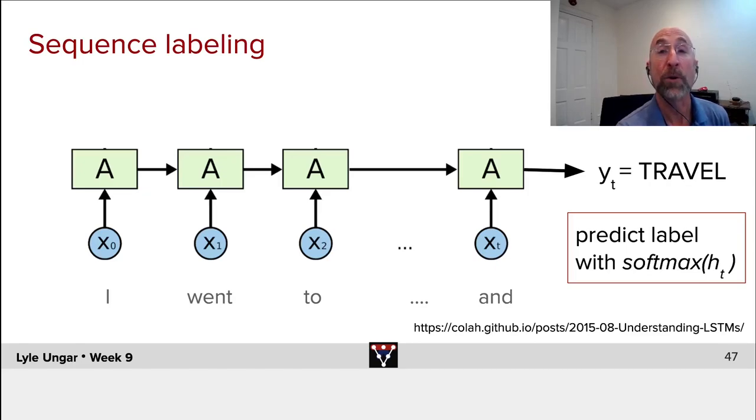Is this sentence about travel? Is this sentence about shopping? Is this sentence about friendship? So, it's a way to map a sequence to a hidden state, and the hidden state then to a label.